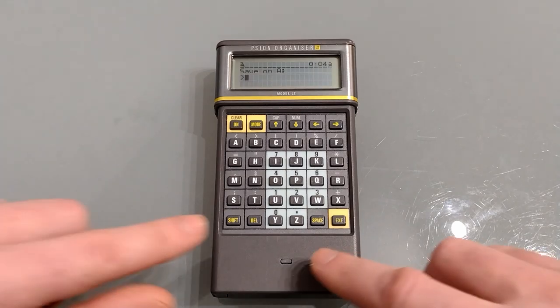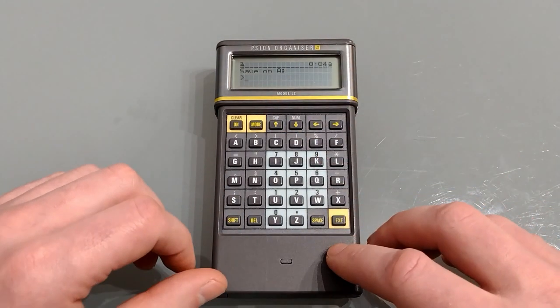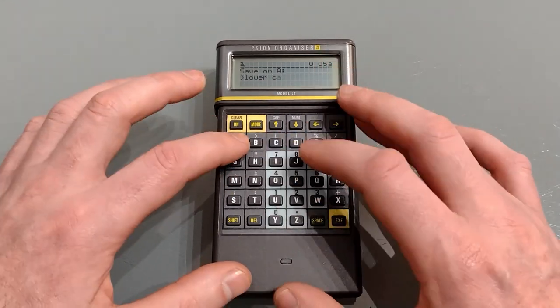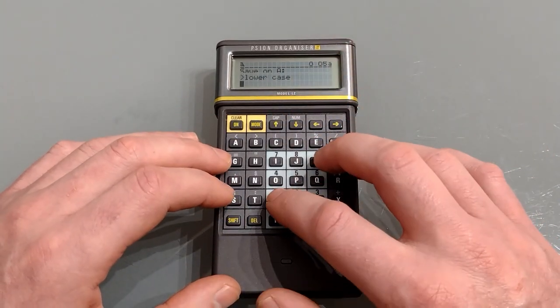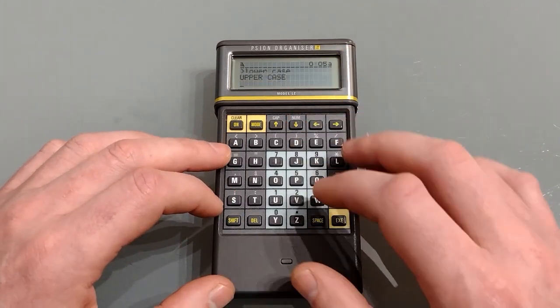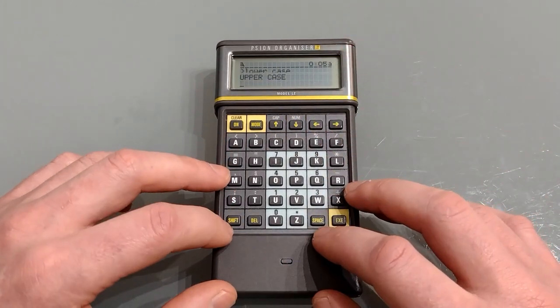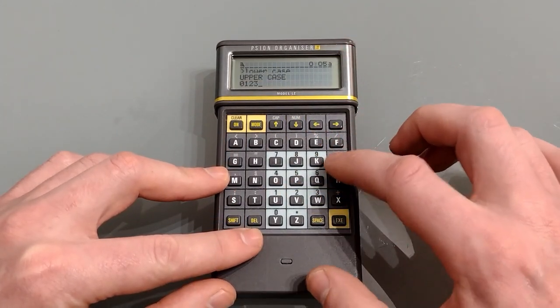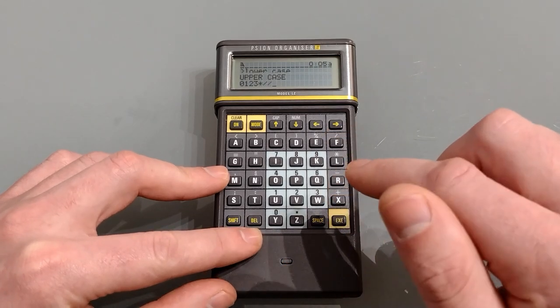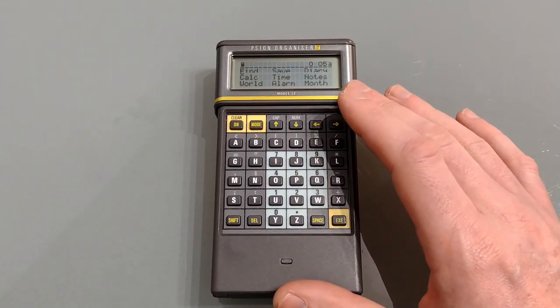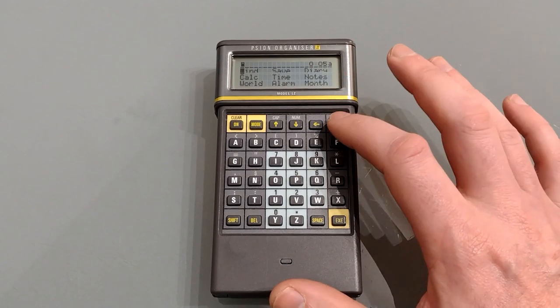When inputting characters, if you press shift and caps you can then put in lowercase. Shift caps returns it back to uppercase. And shift and number allows you to enter numbers or characters. Again execute will save it. There's a few extra functions to the data file on here and we'll come to those in due course.